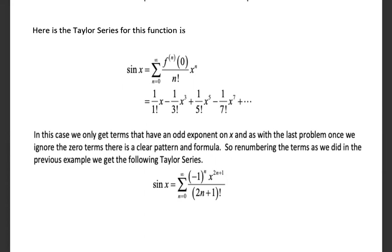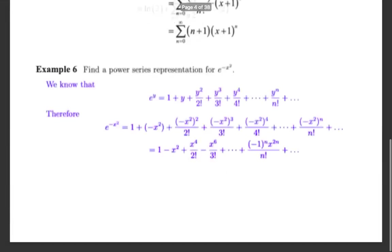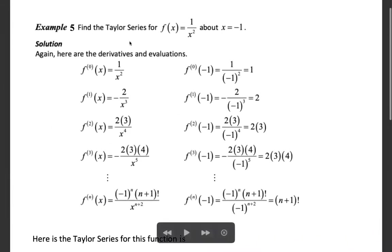This is the Maclaurin series (Taylor series about x = 0) for sin x. Next problem: find the Taylor series for f(x) = 1/x² about x = minus 1. So f(x) = 1/x², and f(minus 1) = 1/(minus 1)² = 1. The first derivative is minus 2/x³, and at x = minus 1 that equals minus 2 over (minus 1)³ = 2.